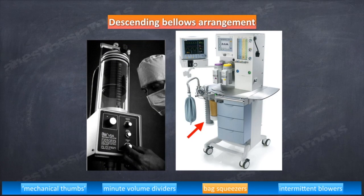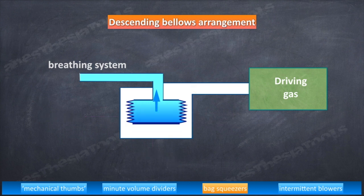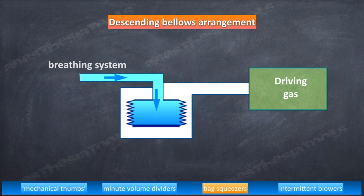Second type is bag squeezer: a descending bellows arrangement. Hanging bellows, which typically is weighted, could fill whether the circuit disconnection is there or a leak or a normal exhalation is present. The room air could enter the circuit and allow the bellows the ability to return to its fill position. During exhalation, the weighted bellows draw gas mixture from the breathing system into the bellows. As in the previous one, the drive gas gets flushed out of the housing.